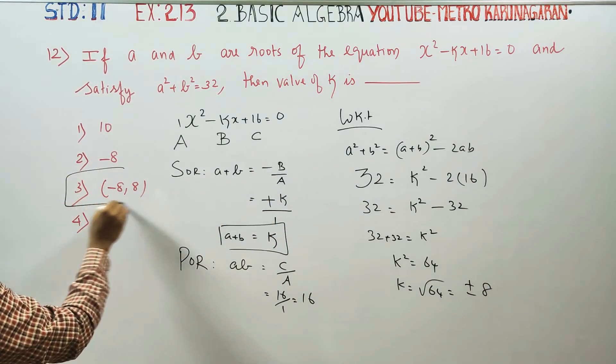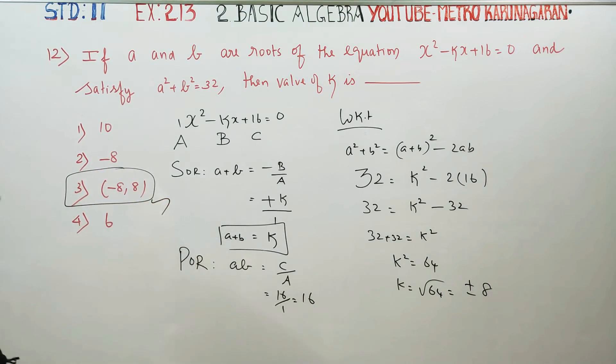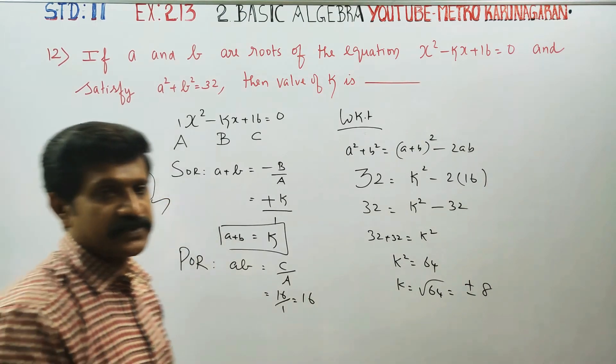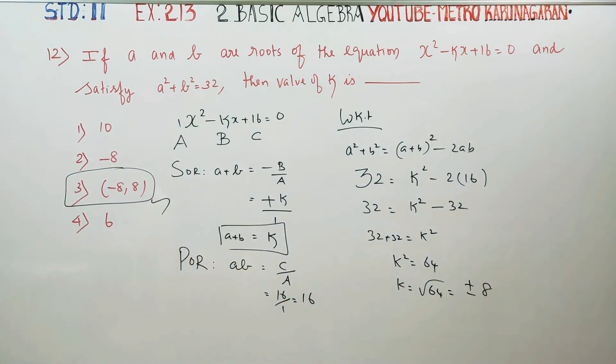Now you can find the best option. The answer is plus or minus 8, so k equals ±8. That is the solution. Thank you.